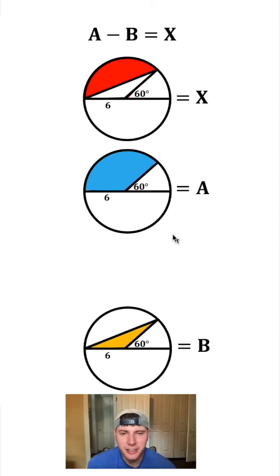First let's solve for A. If this is 60 degrees right here, we know this angle right here is going to be 120 degrees. The area of an entire circle is pi r squared. This is only 120 out of 360 degrees of an entire circle. So we'll say the proportion 120 over 360, and 120 over 360 is the same thing as 1 third.